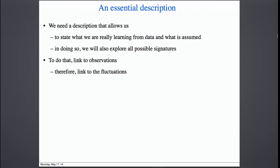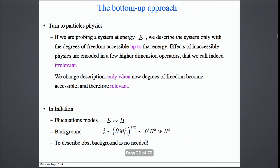In order to understand what we really know about inflation, we need a description that allows us to state what we are really learning from data and what is instead being assumed. Only then will we naturally explore all possible signals of inflation. In particle physics, when we probe a system at energy scales of order A, we describe the system only with degrees of freedom accessible up to that energy. Effects of inaccessible physics are encoded in a few higher-dimension operators — irrelevant operators. We change the description only when new degrees of freedom become accessible and relevant.